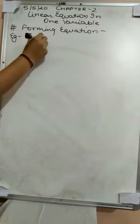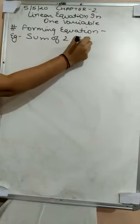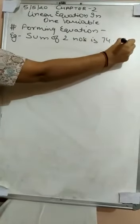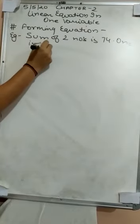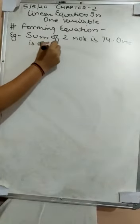I am going to explain with an example. The sum of two numbers is 74. One is 10 more than the other. What are they saying? After adding two numbers, the sum we get is 74. But the first number is not given and the second number is also not given. So what are we going to do?